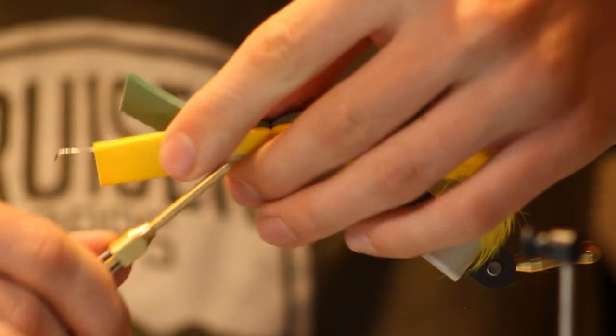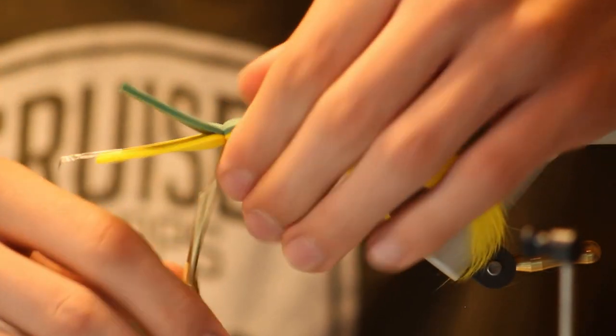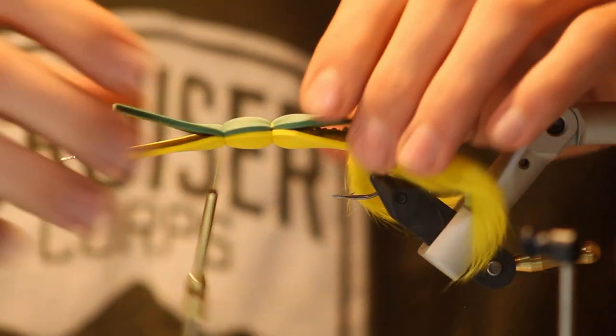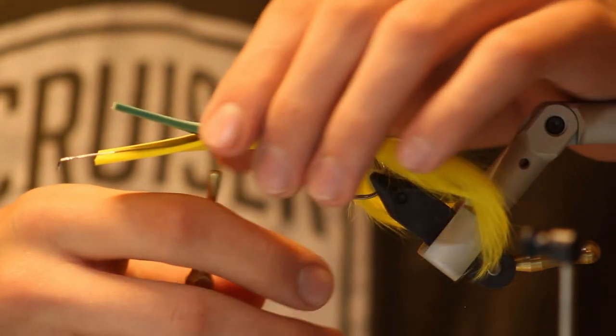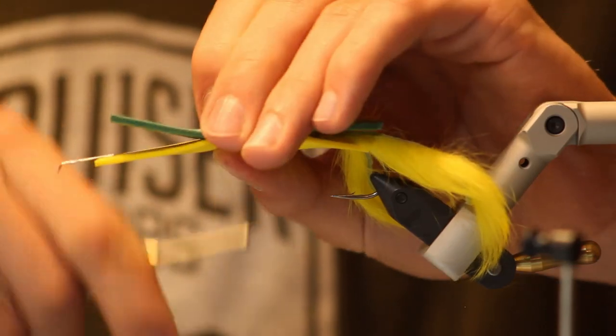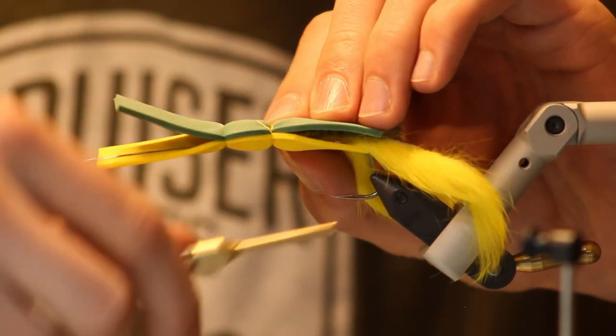And again, this doesn't matter as much how it looks. It kind of matters structurally right here on this tie because if you tighten it down too much, your head will be round and that doesn't look that good. So I'm going to run across back over.